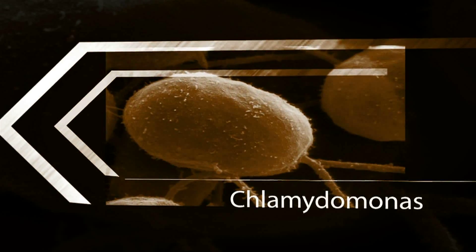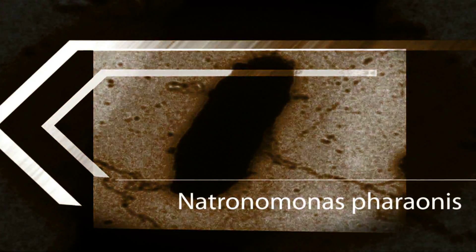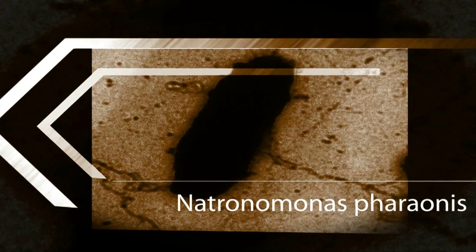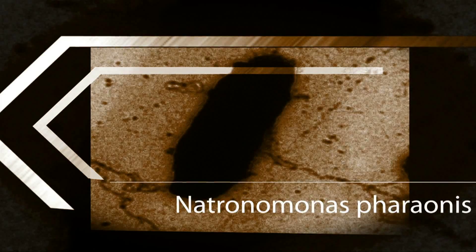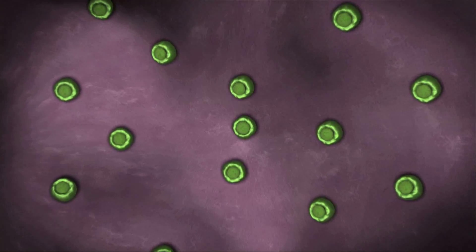The Chlamydomonas algae, found in ponds and lakes the world over, and Neutronomonas pharaonis, a microbe found in remote, super salty, Saharan lakes.